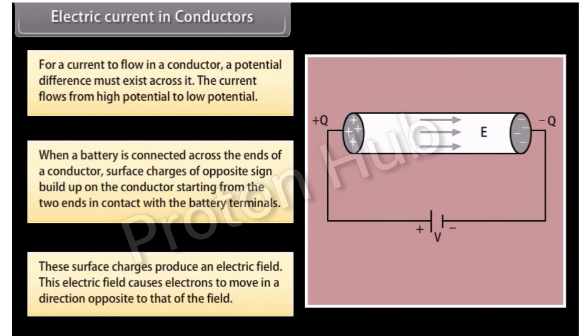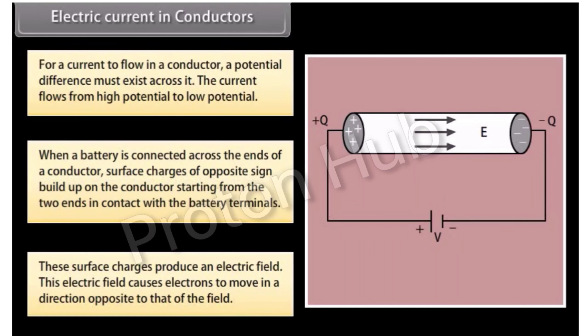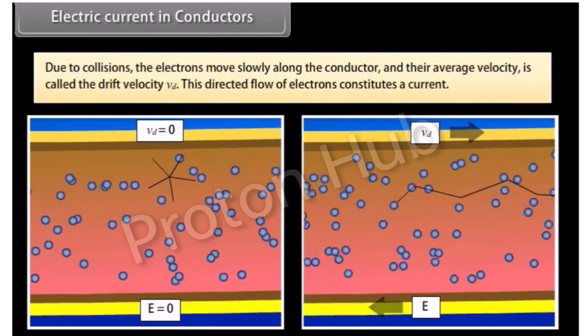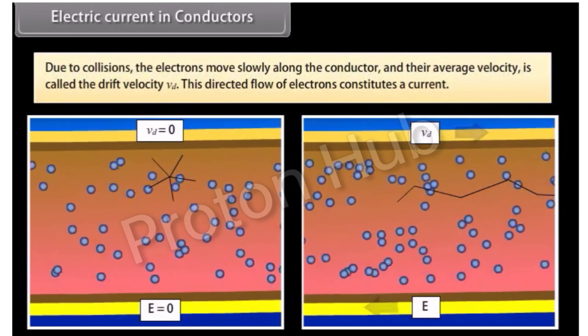These surface charges produce an electric field. This electric field causes electrons to move in a direction opposite to that of the field. Due to collisions, the electrons move slowly along the conductor and their average velocity is called the drift velocity Vd. This directed flow of electrons constitutes a current.